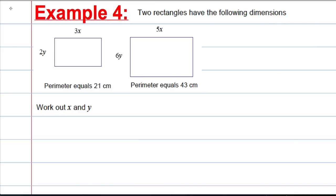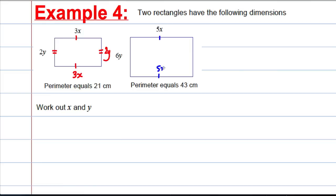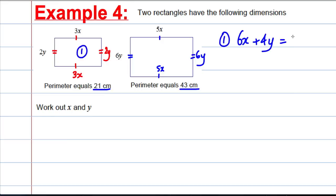Example 4. Two rectangles have the following dimensions. Work out X and Y. For the first rectangle, opposite sides are equal, so the sides are 3X and 2Y, giving a perimeter equation of 6X plus 4Y equals 21. For the second rectangle, the sides are 5X and 6Y, giving 10X plus 12Y equals 43.